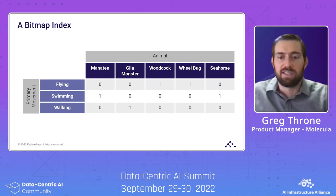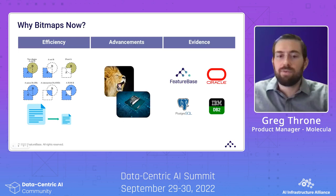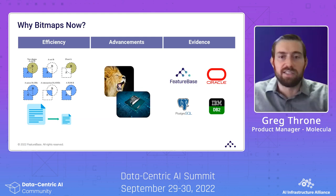We don't have to store the value — let's say, swimming — over and over again for every animal that primarily swims. We just have to set it once and set a single bit each time. This type of efficiency can be achieved in creative ways across other data types like numeric and datetime using what's known as bit slice indexing. The bigger message is: across a large number of records, bitmaps naturally result in massive storage savings, and these storage savings also translate to compute performance.